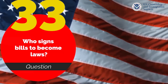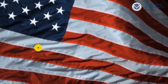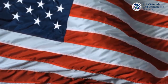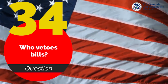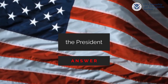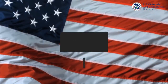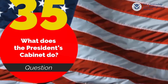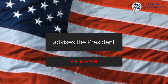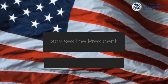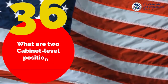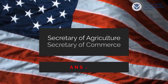Who signs bills to become a law? The president. Who vetoes bills? The president. What does the president's cabinet do? Advise the president. What are two cabinet-level positions? Secretary of Agriculture and Secretary of Commerce.